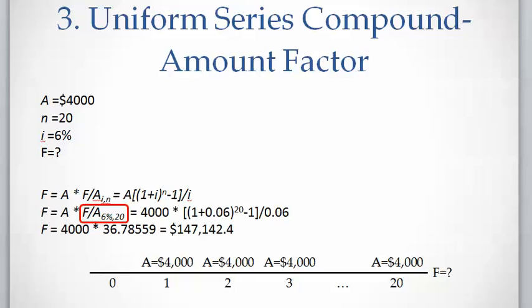And we find the answer. So if you invest $4,000 per year for 20 years with 6% interest rate, you will have about $147,000 at the end of 20th year.